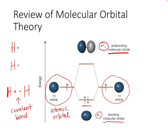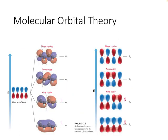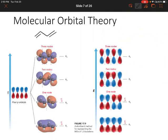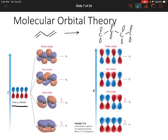Now let's apply this to our conjugated pi systems. We'll start with 1,3-butadiene, which we talked about last time. It has two double bonds separated by a single bond — that's a conjugated system. Each carbon atom is sp2 hybridized, which means each carbon has a p orbital. We have four p orbitals total and notice that we have four pi electrons, so we need to figure out where those four pi electrons are going to go.